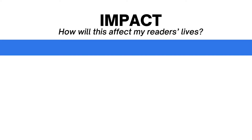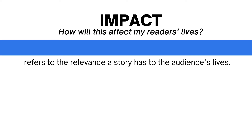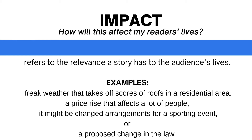The first one is Impact. The question here is, how will this affect my readers' lives? Impact refers to the relevance a story has to the audience's lives. For example, a freak weather that takes off scores of roofs in a residential area, a price rise that affects a lot of people, changed arrangements for a sporting event, or a proposed change in the law.